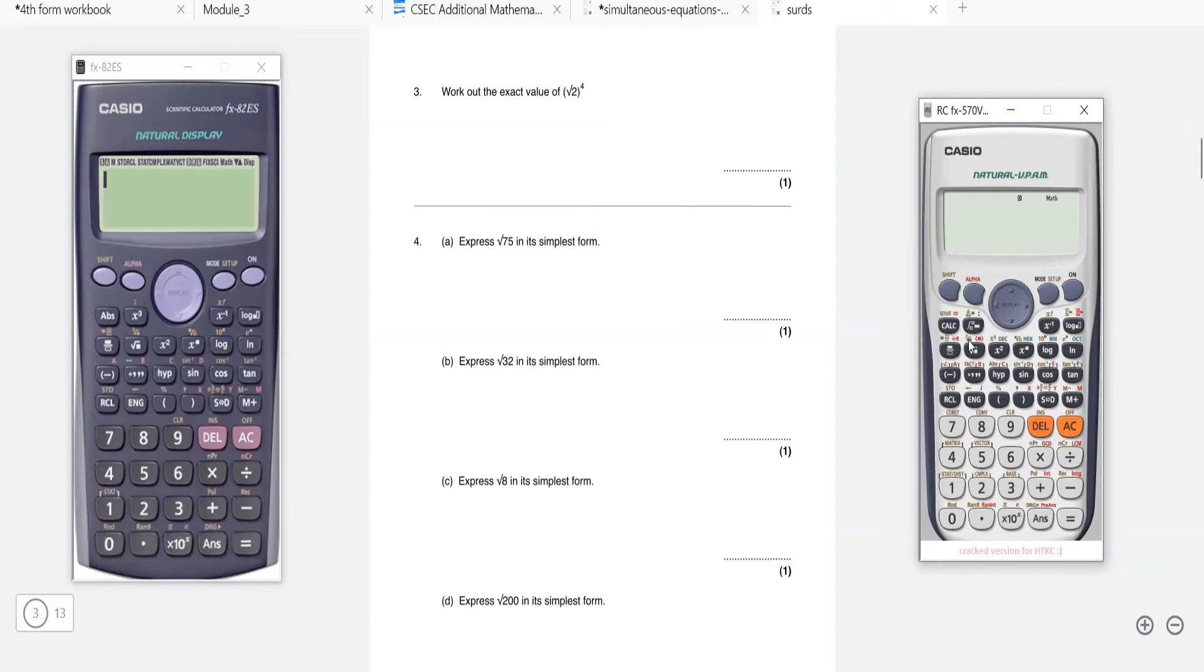What you can do is press the square root button and press square root 75, and it's simplified for you to get 5√3. So this is 5√3. Likewise, if you're using this calculator over here, square root 75 also gives you 5√3. You can use any one of these calculators to simplify surds.